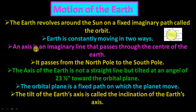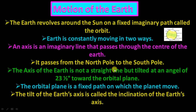The axis is an imaginary line that passes through the center of the earth, from the north pole to the south pole. The axis of the earth is not a straight line, but tilted at an angle of 23.5 degrees toward the orbital plane.